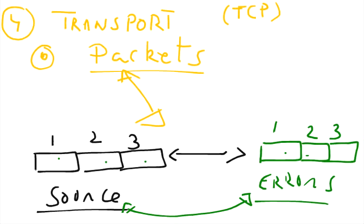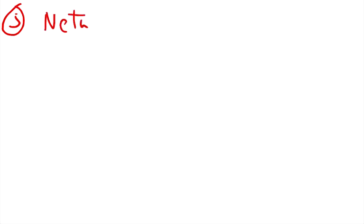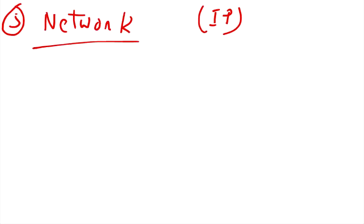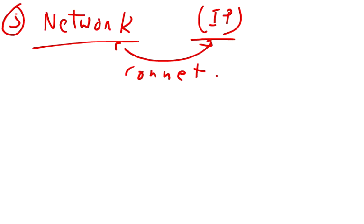It is basically the work of the transport layer to transport the packets. We have the network layer, and the internet protocol works on the network layer. The transport layer is the connection-oriented layer, and the protocols working on the transport layer are called connection-oriented protocols because they need a connection between them. The IP protocol works on the network layer and they are connectionless protocols.